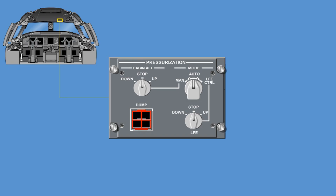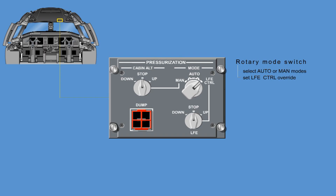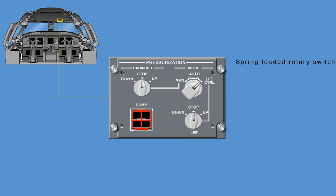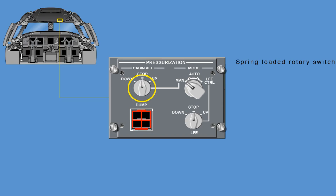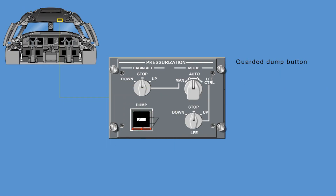The pressurization panel in the cockpit is directly connected to the cabin pressure control system controller and provides the following switches: a rotary mode switch with three locked positions to select auto or manual modes and to set LFE (landing field elevation) control override. When the switch is commanded to the LFE position, the pressurization system remains in automatic mode and only the LFE will be in manual mode. A spring-loaded rotary selector knob with two momentary positions to increase or decrease the landing field elevation. A spring-loaded rotary selector knob with two momentary positions to control the outflow valve manually. And a guarded dump button — when pressed, the dump function is activated and a white stripe bar illuminates on the button.